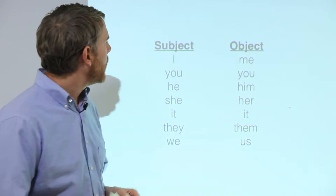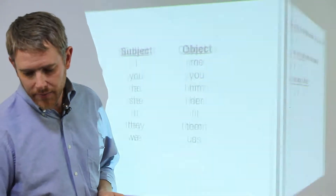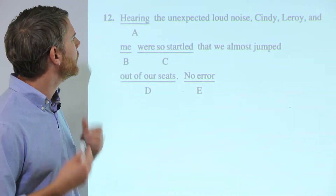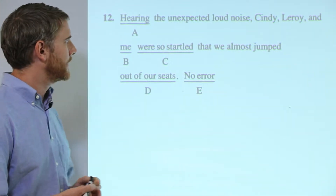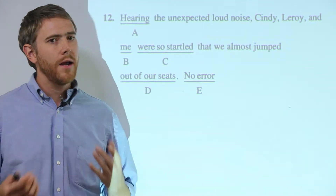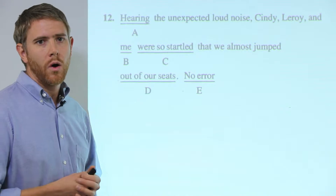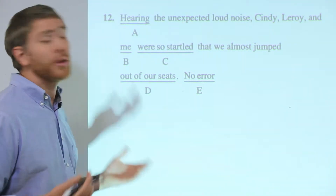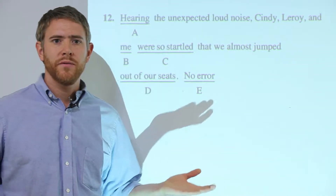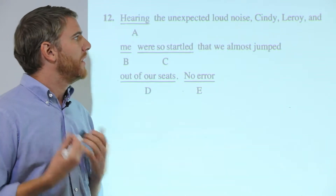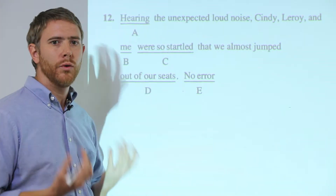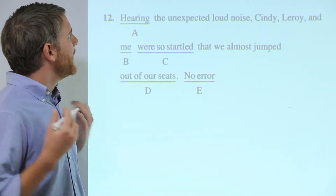Let's take a look at a question. 'Hearing the unexpected loud noise, Cindy, Leroy, and me were so startled that we almost jumped out of our seats.' This is number 12, so it's not too difficult, but it can be kind of tricky because, like a lot of the questions on the SAT writing error identification section, it doesn't really sound wrong. 'Cindy, Leroy, and me were so startled' sounds perfectly fine in normal everyday English, but the SAT isn't testing normal everyday English — it's testing grammar rules that most people don't use when they're talking.